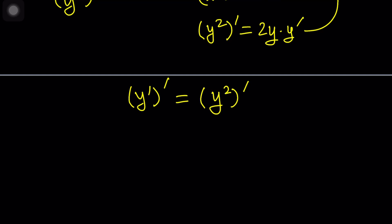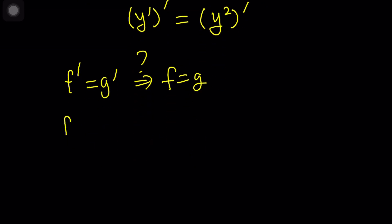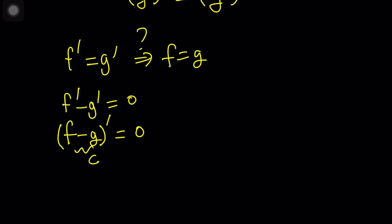What happens if two functions are equal to each other, or their derivatives? If f prime is equal to g prime, then does that imply f equals g all the time, or does it imply something similar? Here's the thing. If you subtract g prime from both sides, you get f prime minus g prime equals zero. The derivative of which function is zero? Think about it, because now I can write this difference as the derivative of the difference.